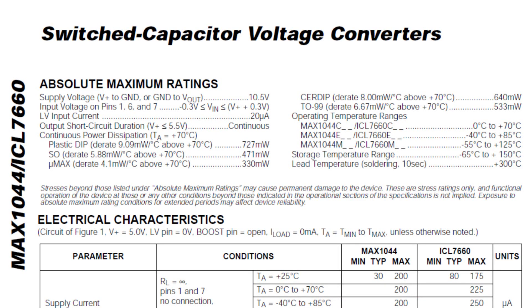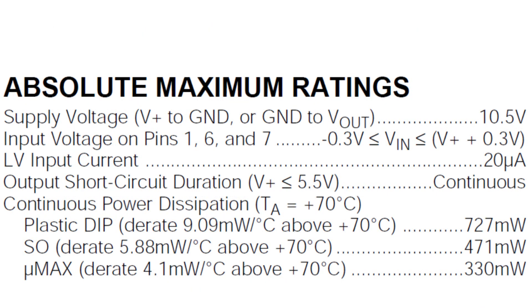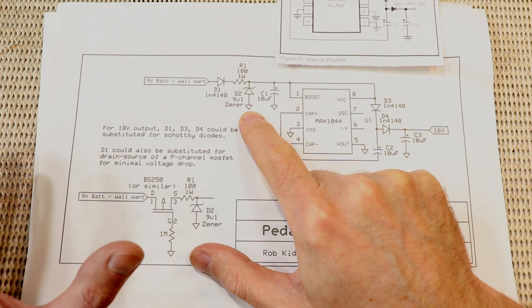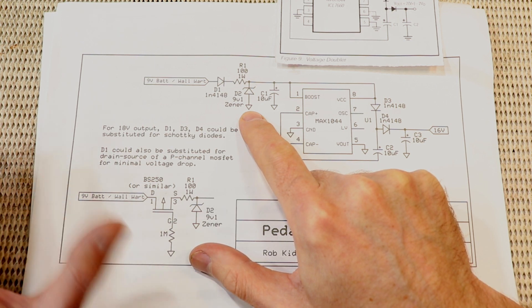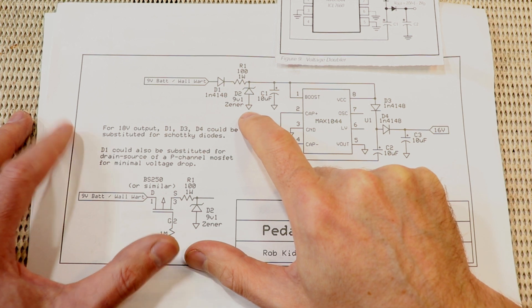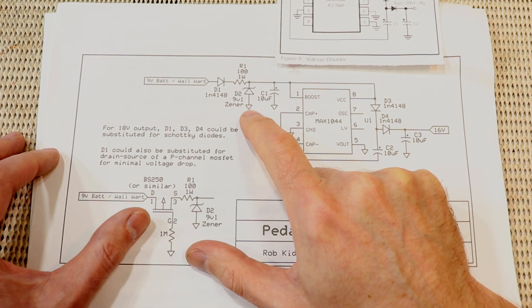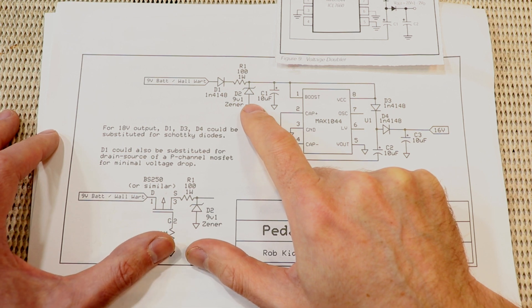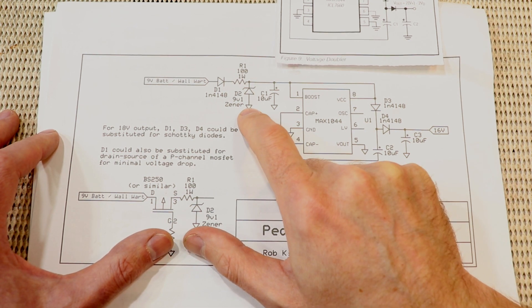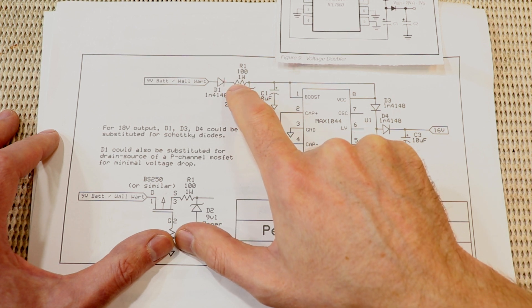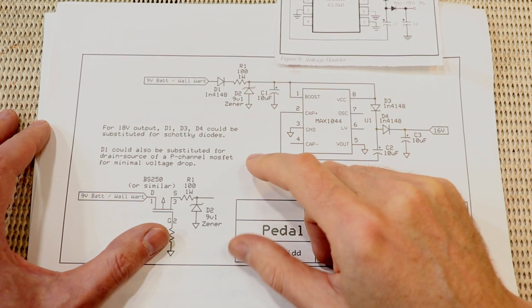With this particular charge pump the max 1044 there's a more pressing reason to ensure the input stays at that 9 or below that 9 volt level and that's because the IC itself is only rated to 10 and a half volts. So with the 9.1 volt Zener diode we know the input will never get too high because any voltage higher than this the diode starts to conduct and the excess is shunted to earth. Of course there's only so much current the Zener can handle this one's rated to 1 watt I think so this resistor here is added to limit that current if it's called on to do its thing.